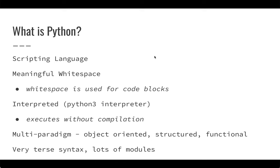So what is Python? Python is a scripting language - we're working in scripts, we're not compiling Python. There are a lot of other scripting languages like JavaScript or Perl, but Python is a pretty effective and pretty powerful scripting language. It has meaningful whitespace, which basically means instead of Java or C++, where you have curly braces to delineate your sections, Python uses indentation to separate function bodies from function declarations and if-else statements from the body of code inside. Python is interpreted - you use the Python 3 interpreter, it executes without compilation. Python is a multi-paradigm language, which means you can use it in a couple of different ways: it can be structured, functional, or object oriented.